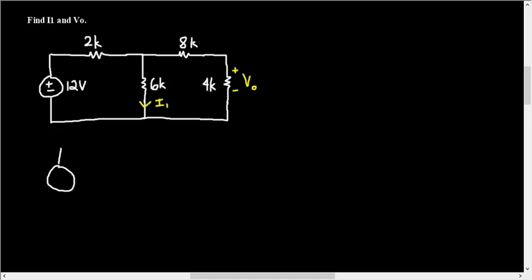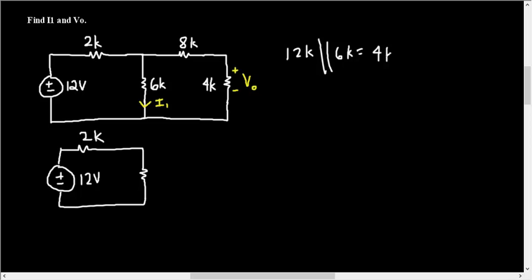If we first redraw the circuit, 12 volts right here, 2 kilo ohms. First of all, we have 8 and 4 kilo ohms in series. That gives us 12 kilo ohms. And that would be in parallel with 6K, which will give us 4,000 ohms. So here's our redrawn circuit.